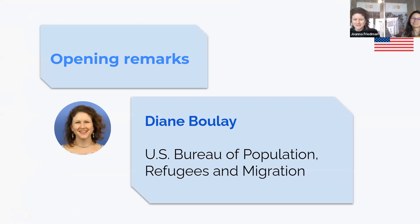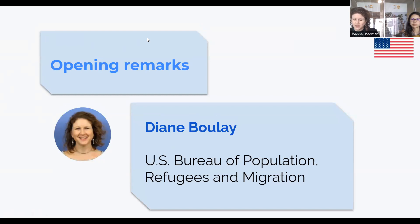Thank you, Joanna. Hello to all. Thank you for inviting me to provide remarks on behalf of PRM, our Humanitarian Bureau within the US State Department, for this very important launch event. I also would like to thank UNFPA for its strong leadership on preventing and responding to gender-based violence in emergency situations. The United States is supportive of cash assistance as a dignified, discreet, and flexible way to help survivors escape violent relationships, seek emergency services, and secure temporary shelter. Such assistance helps women and girls make their own choices about their health and safety. The potential transformative power of using cash and voucher assistance as a tool in GBV prevention and response is clear.